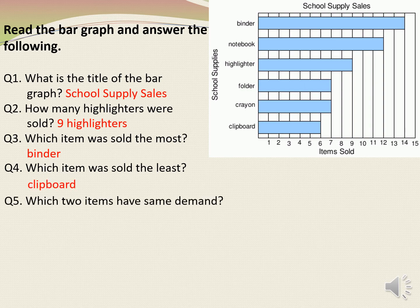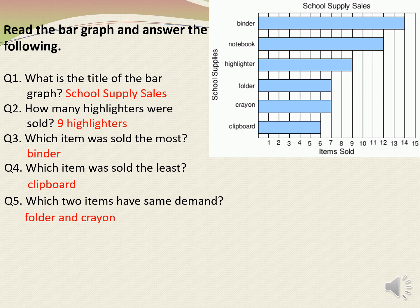Next question: which two items have the same demand? To find out the answer, we need to see the bars which are of the same length. And we can see that folder and crayon have bars of the same length. Therefore, our answer is folder and crayon.